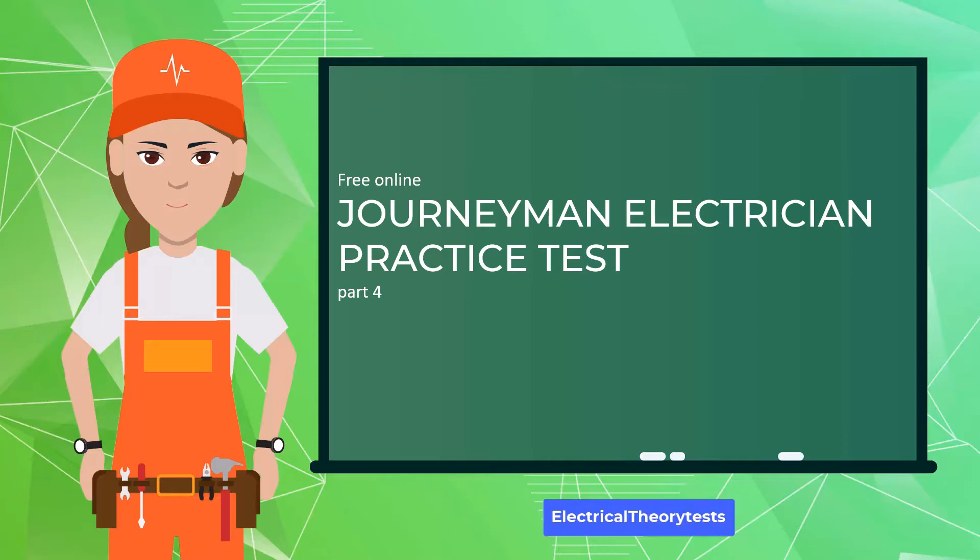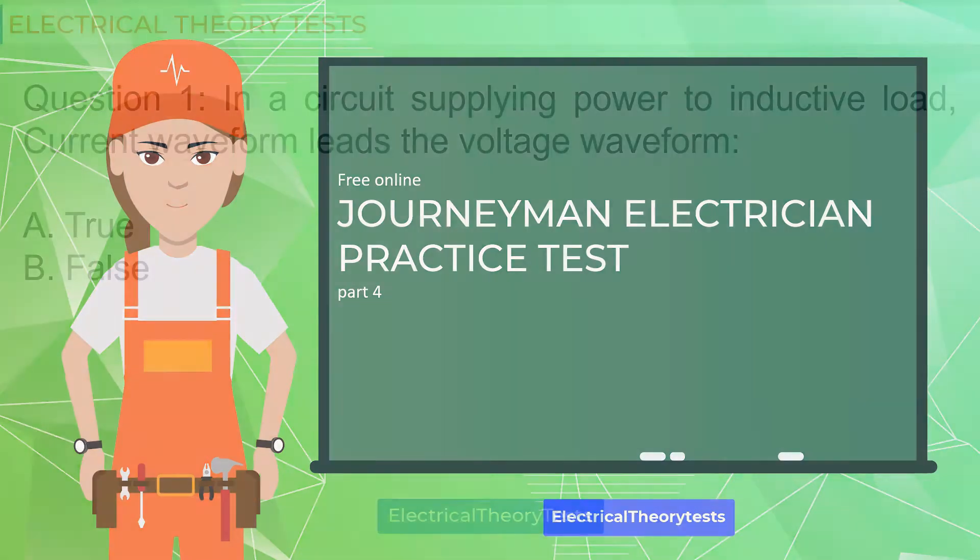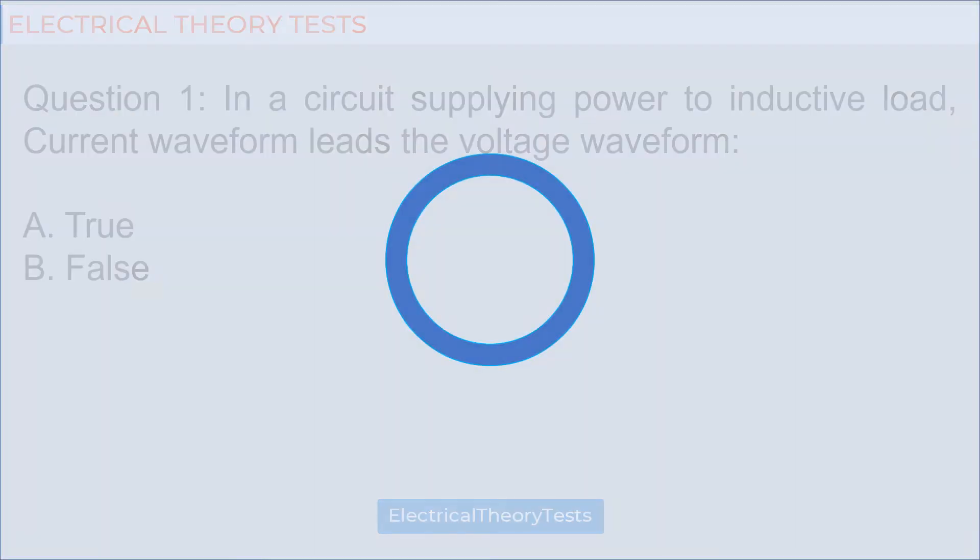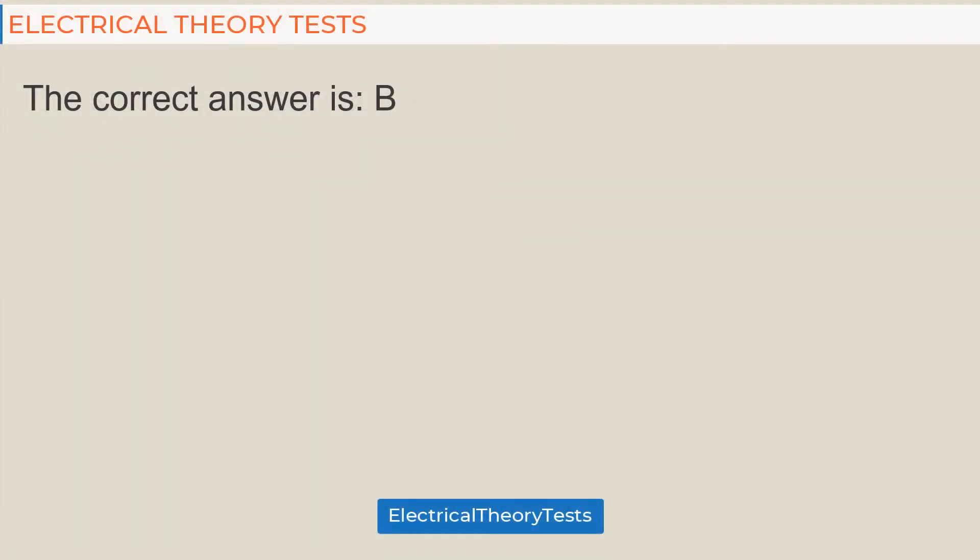Question 1: In a circuit supplying power to inductive load, current waveform leads the voltage waveform. A: True, B: False. The correct answer is B.